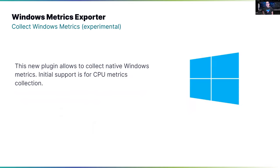We also talk about metrics logs — but now we can also collect metrics from Windows natively. This experimental plugin is currently able to collect CPU metrics from Windows. During the 1.9 release cycle, we're going to add other metrics — for example, disk, memory, storage, and file system. If you're interested in a specific collector for Windows that isn't there yet, please open an issue on GitHub and we'll try to prioritize it.